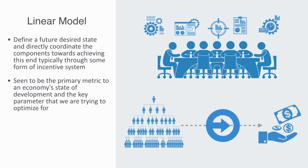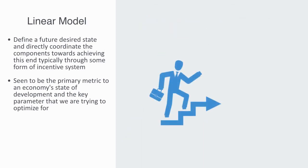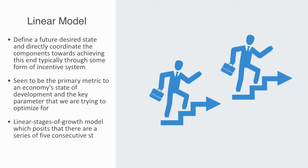This paradigm to economic development found its most clear theoretical expression in the so-called linear stages to growth model, which posits that there are a series of five successive stages of development which all countries must go through during the process of economic development. The primary objective of developing nations was to control and guide nations through these successive stages.